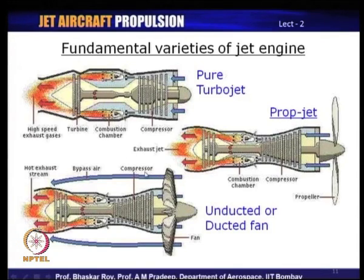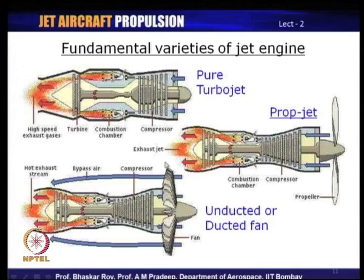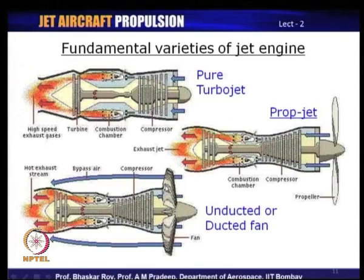The most modern version of the jet engine is the fan engine or turbofan engine, which has two versions: unducted fan and ducted fan. Most turbofan engines today are ducted fan engines — the big fan in front is covered inside a duct. Some of the most modern versions coming up, likely to fly in future, are the unducted versions where the big fan is not covered with a duct, so they are simply called unducted fans. If they become a little bigger than just a fan, they are sometimes called prop fans.